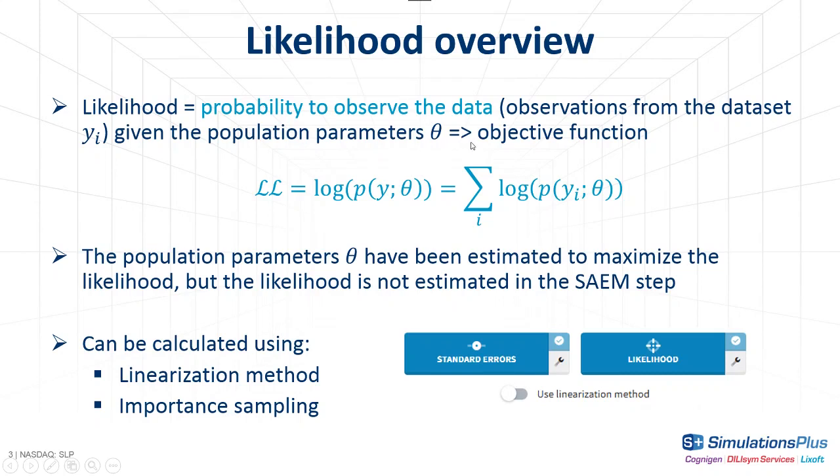It is the objective function we use when estimating the population parameters. It is more convenient to use the log-likelihood, LL, that is the log of this probability, and it can be decomposed as the sum of the log of the likelihood for each individual, with Yi representing the observation for individual i, and θ the population parameters.